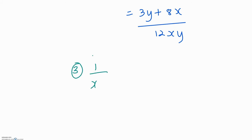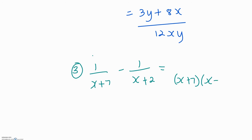Now we go to a little bit more complicated algebraic fractions — this time we're going to have an expression as a denominator. So you have 1 over x plus 7 for the first fraction and 1 over x plus 2 for the second algebraic fraction. As before, multiply both denominators: x plus 7 times x plus 2. Everything underneath the fraction sign will be considered one term, so you cross multiply: x plus 2 times 1.